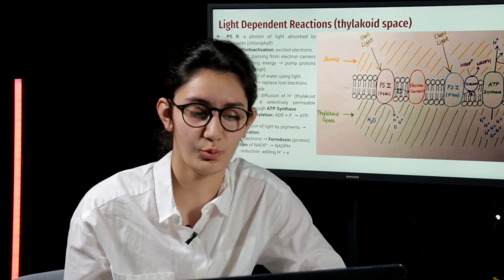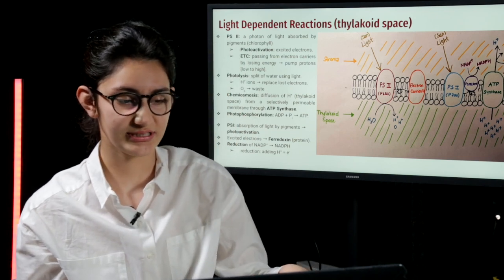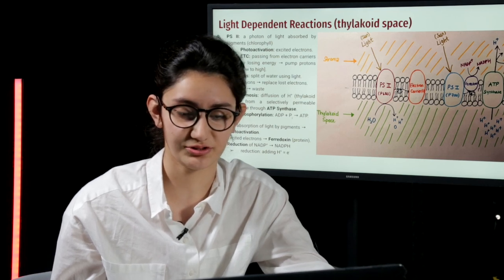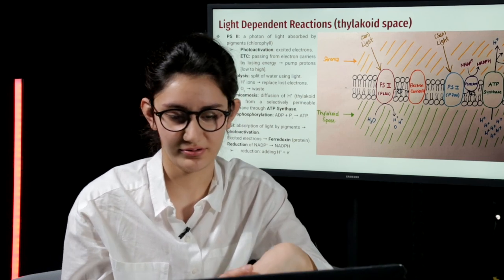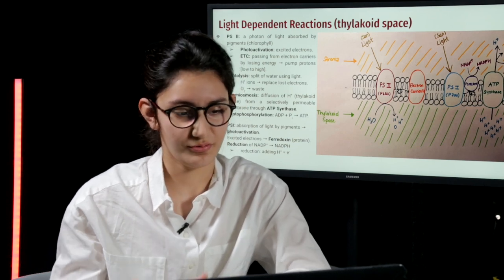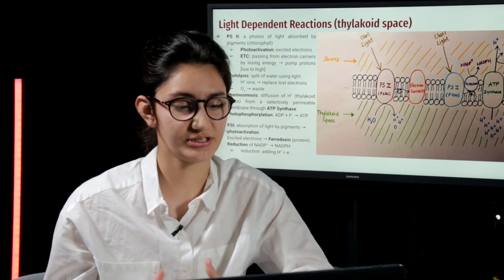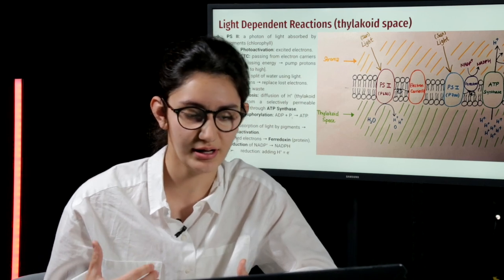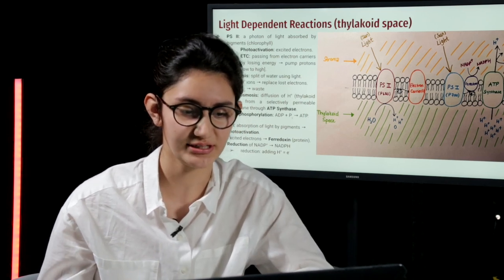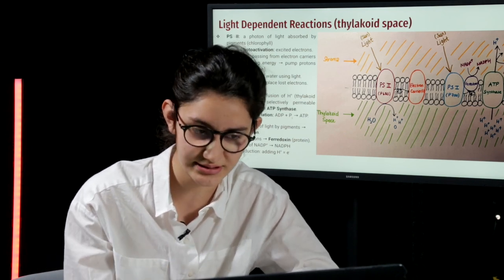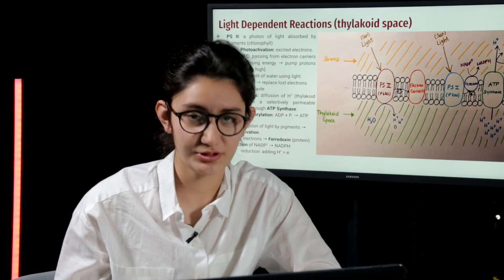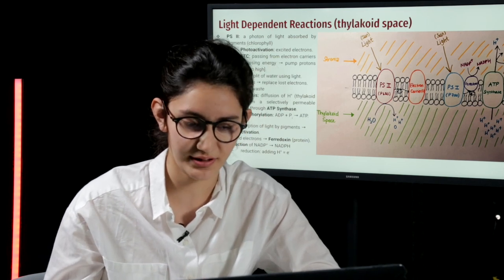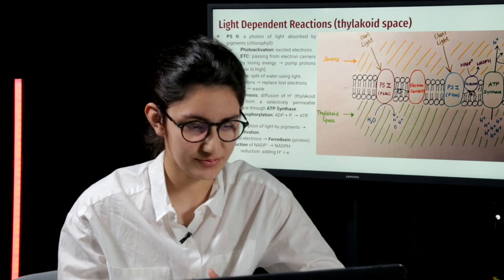This is the split of water molecules using light energy. From photolysis, hydrogen ions and oxygen are produced. Hydrogen ions replace the lost electrons in the photosystem, whereas oxygens gather and produce the oxygen waste gas. After that photolysis and photoactivation occurs, a process called chemiosmosis happens. This process is basically the diffusion of hydrogen ions that were accumulated in the thylakoid space from a selectively permeable membrane through ATP synthase. When that diffusion occurs, a process called photophosphorylation occurs, where ADP and inorganic phosphate come together and produce ATP.